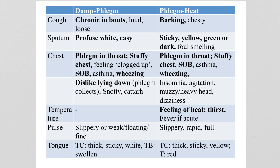The two you need to learn are damp phlegm, which gives chronic coughing in bouts where the cough is loud. The phlegm is loose, the sputum is profuse, white, and easy to expectorate. There can be phlegm in the throat, a stuffy chest, feeling clogged up, shortness of breath, asthma, or wheezing.